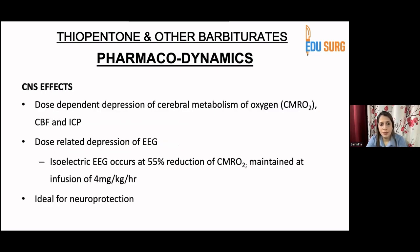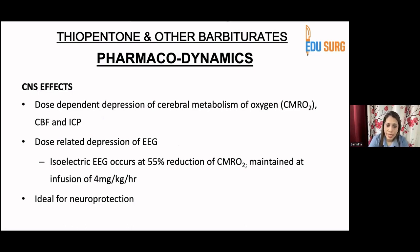Regarding CNS effects, there is dose-dependent depression of the central metabolic rate of oxygen, cerebral blood flow, and intracranial pressure, as well as dose-related depression of EEG. Isoelectric EEG occurs at a 55% reduction of the central metabolic rate of oxygen, maintained at an infusion of 4 mg/kg/hour. For this reason, it is ideal for neuroprotection — in cases of traumatic brain injury, or when patients have just been resuscitated from a cardiac arrest, thiopentone can be used as an infusion for neuroprotection.